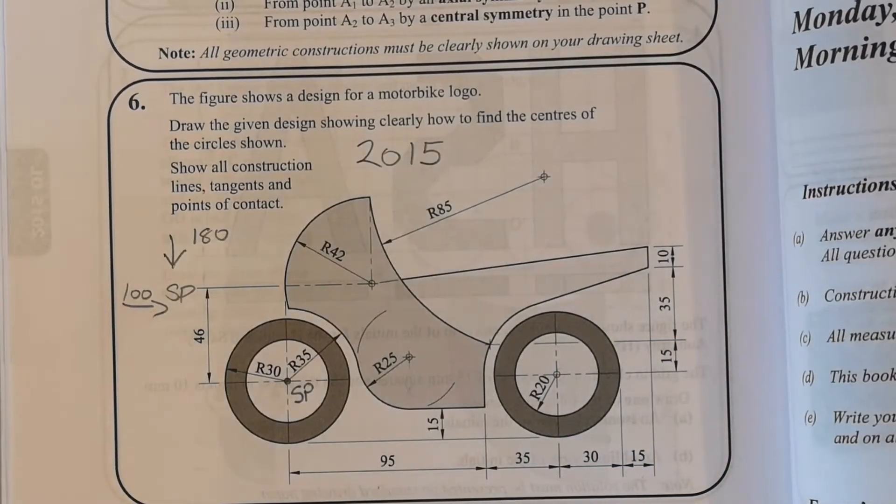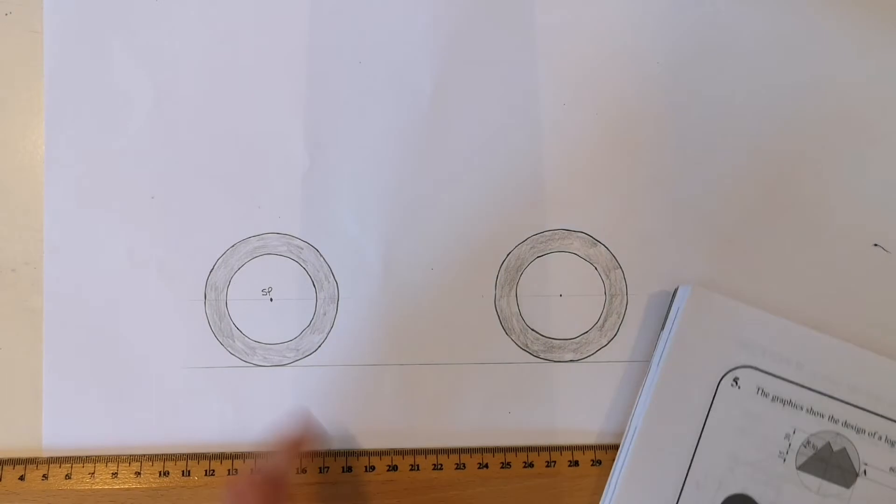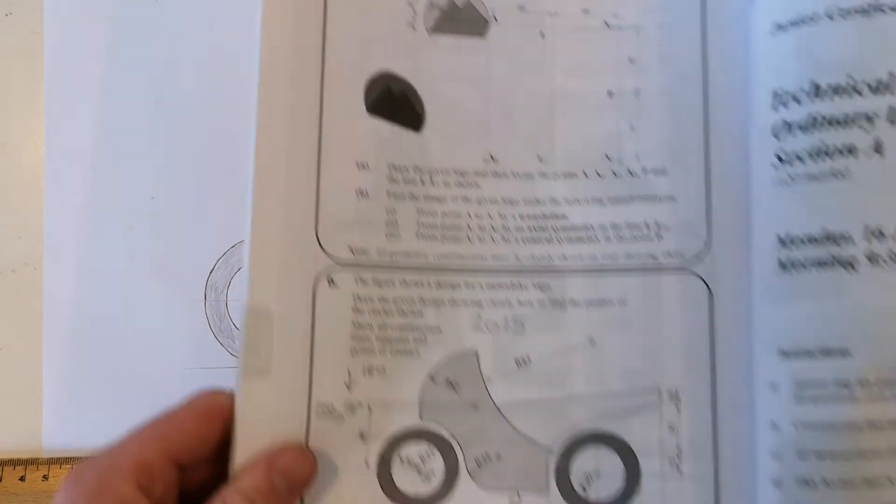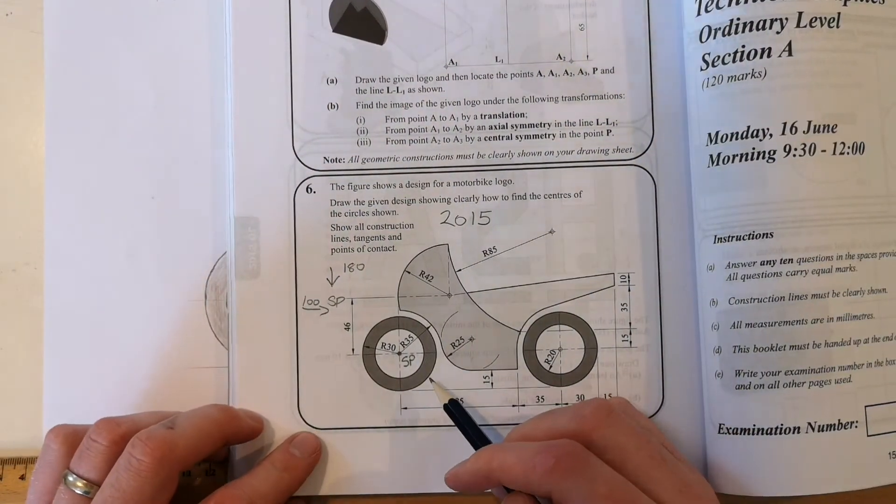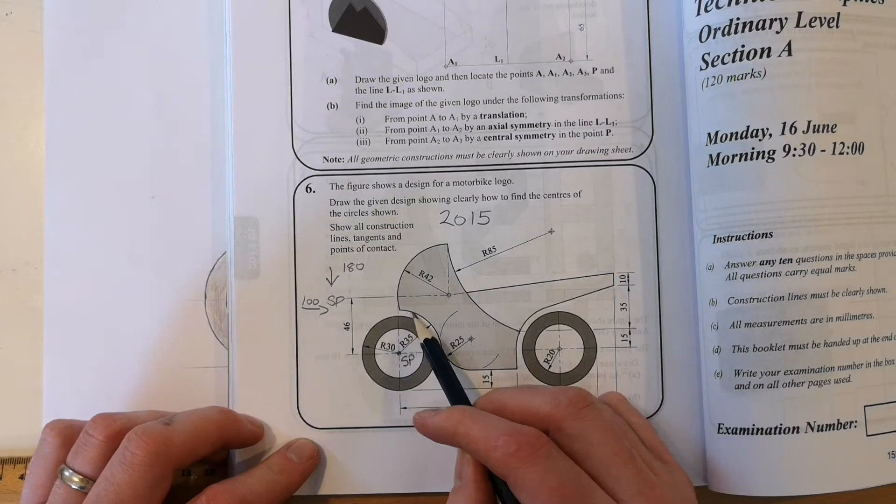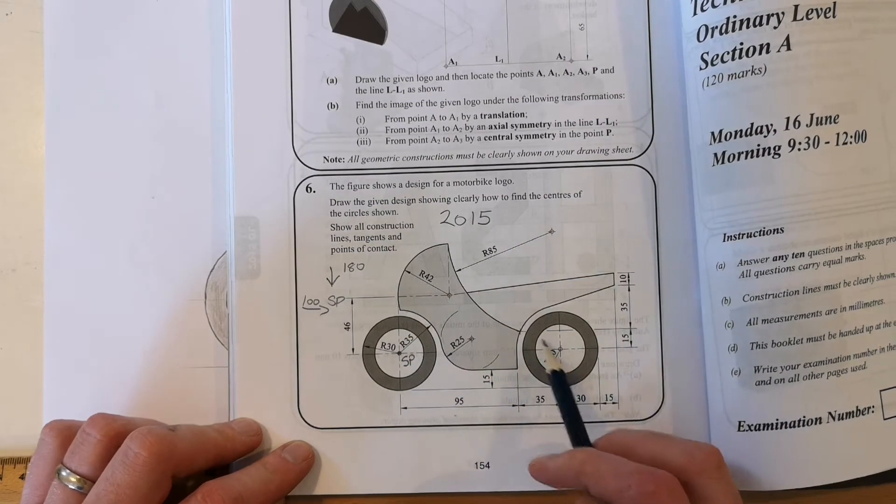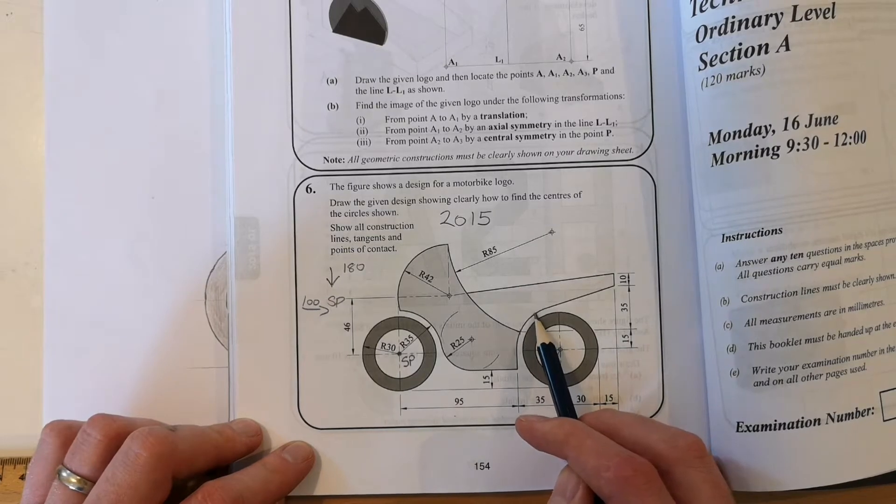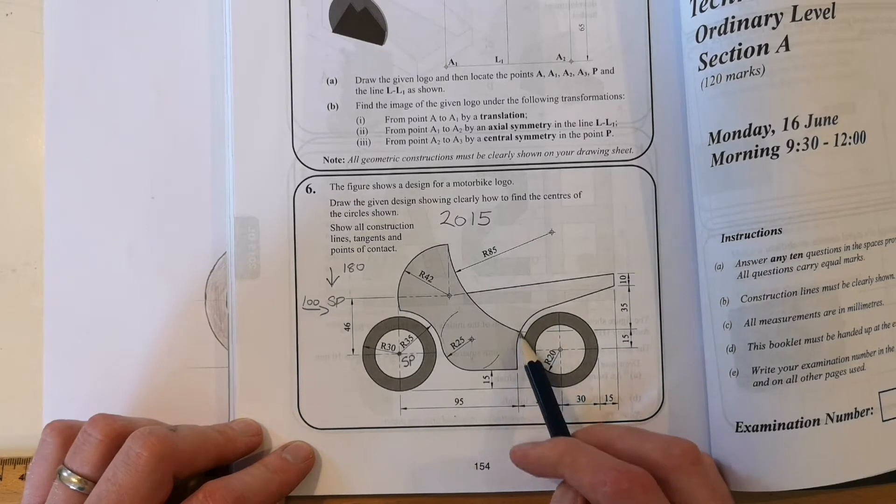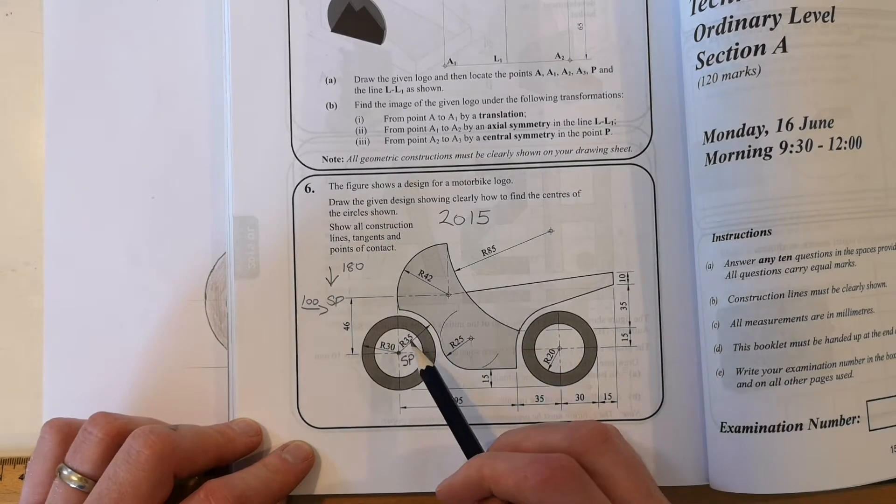I've now got my two circles drawn in, my two wheels. The next thing I'm going to do - you can see in the top right inside of the front wheel you have to do a radius 35 arc, and on the top left inside of the back wheel you have to do the same, a radius 35 arc there as well. Very quickly get them done.